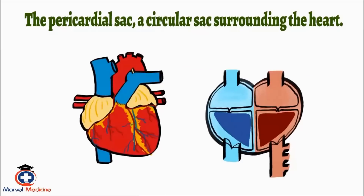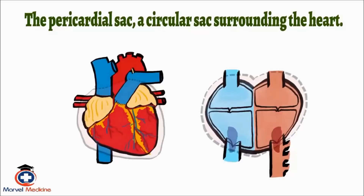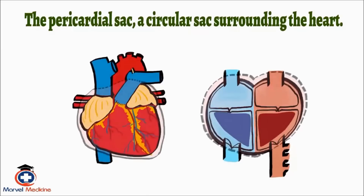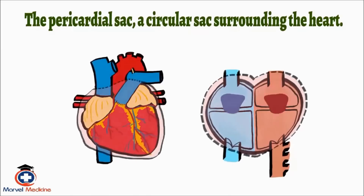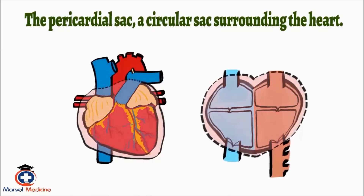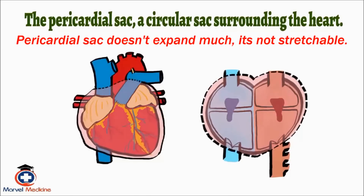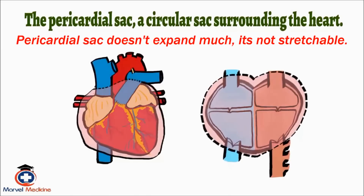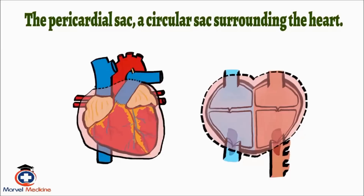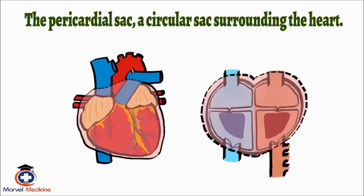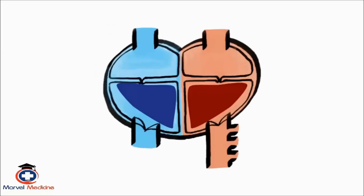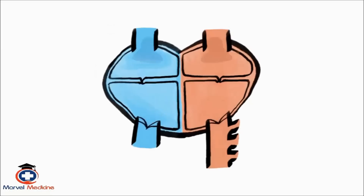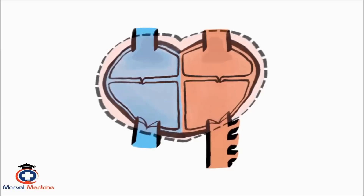Try to get an understanding about the compliance of this sac. It's not very compliant at all. What does that mean? It doesn't expand much — it's not stretchable. If you want to understand compliance better, check out the lecture here. Now that we have those images visualized, imagine a pericardial effusion.